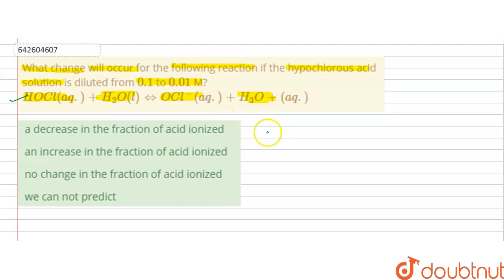Now, when the solution is diluted from 0.1 molar to 0.01 molar, on dilution the solution is diluted and the number of ions increases.